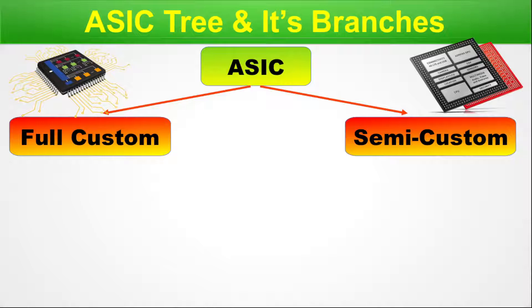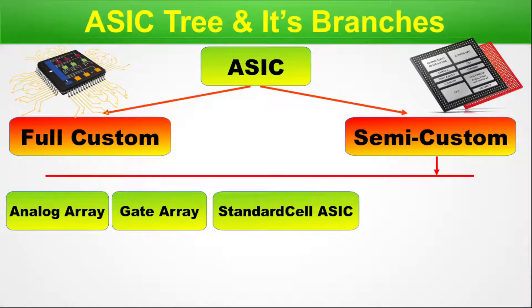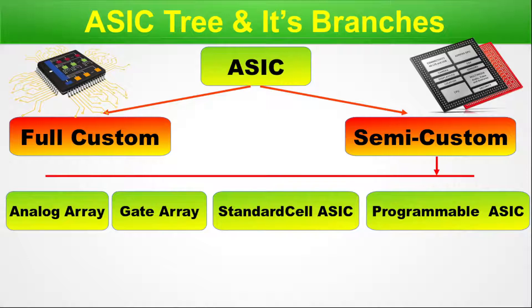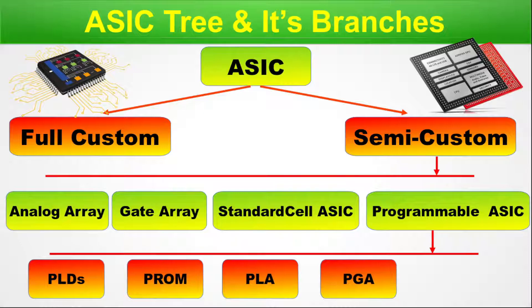The full custom does not have any subdivisions, while the semi-custom has subdivisions starting with analog array, gate array, standard cell ASIC, and programmable ASIC. The first three do not have any subdivisions, and the programmable ASIC is further subdivided into PLDs — from PLA, PGA, and FPGA. This is a bird's eye view of the entire ASIC tree and its branches.